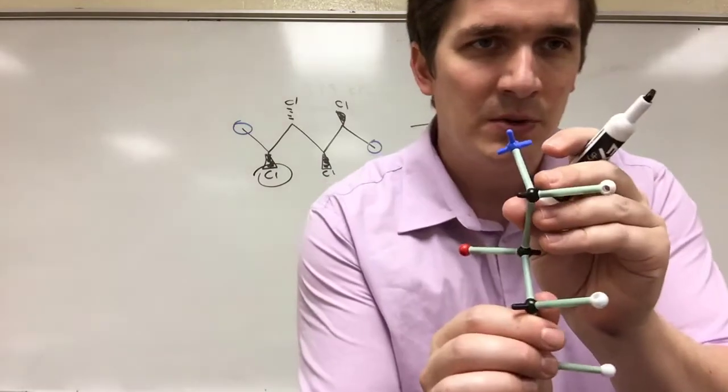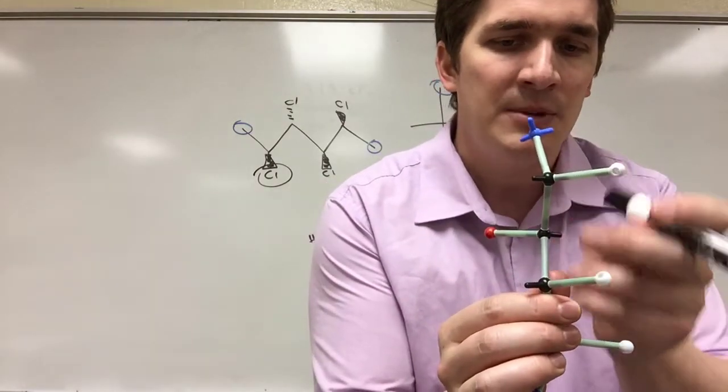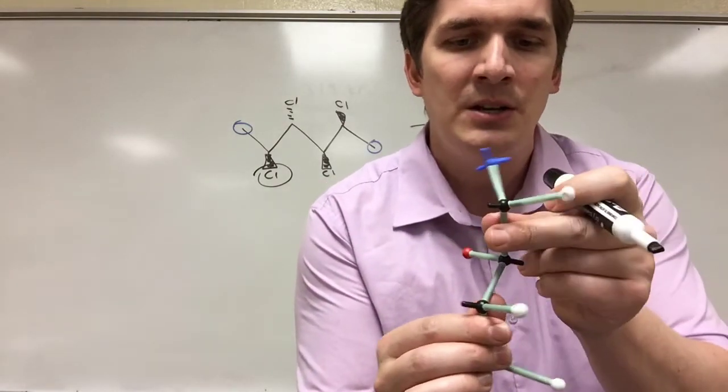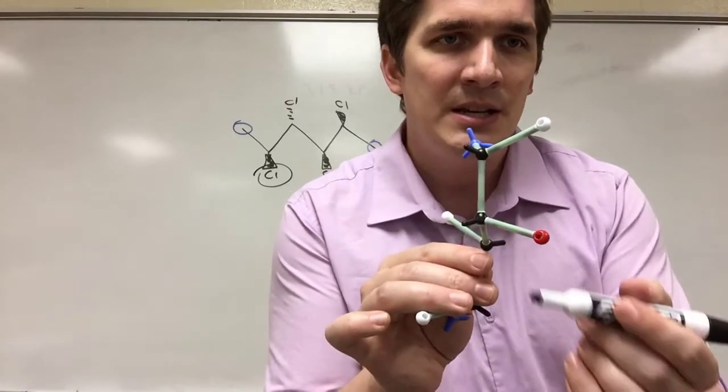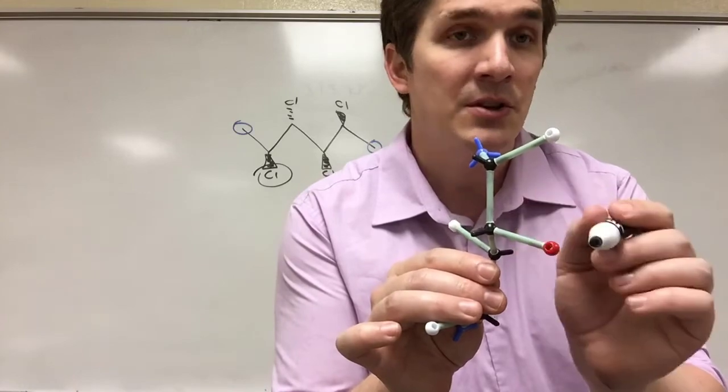Now, if I go down to the next one, we're looking at the wrong way. We've got a carbon coming out and a carbon coming out. So what we need to do is we need to rotate the bond just like that. And what we see now is that our chlorine is on the right again.